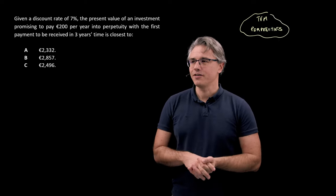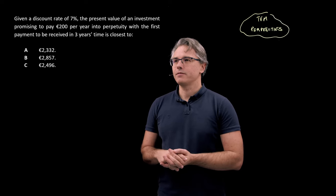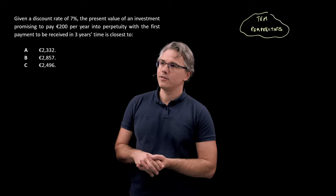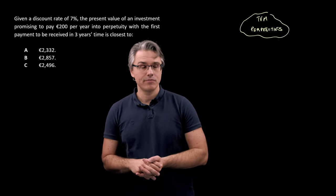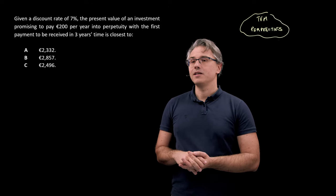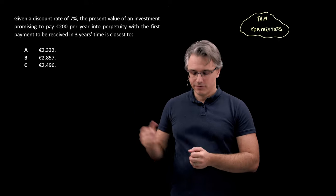This is the question we'll solve. Given a discount rate of 7%, the present value of an investment promising to pay 200 euro per year into perpetuity, with the first payment to be received in three years time is closest to, and three options follow.